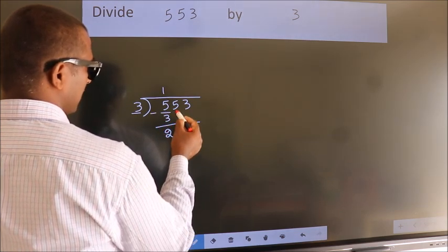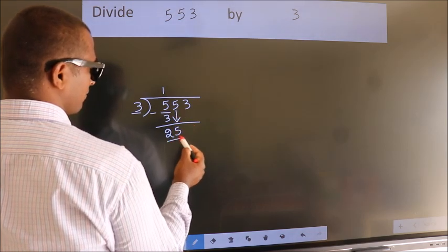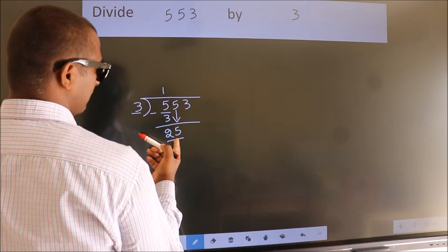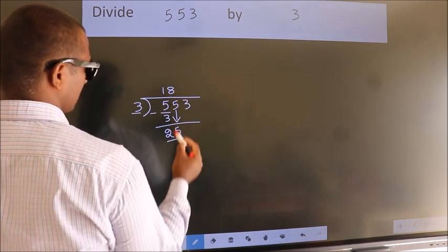After this, bring down the next number. So, 5 down. So, 25. A number close to 25 in the 3 table is 24: 3 times 8 is 24.